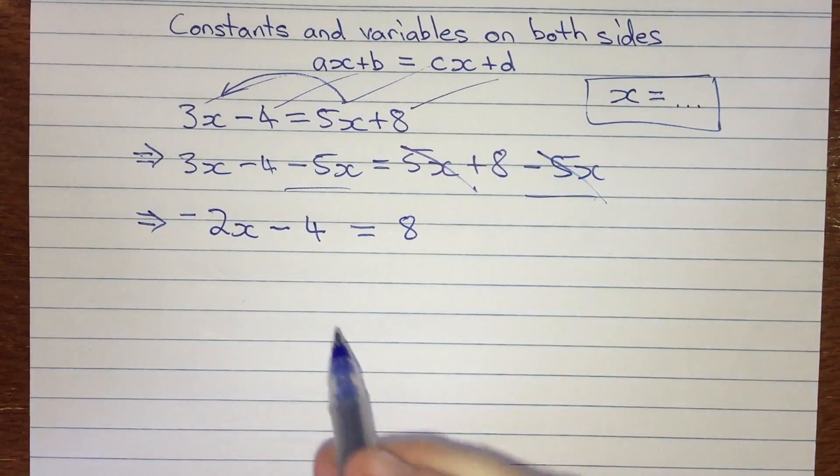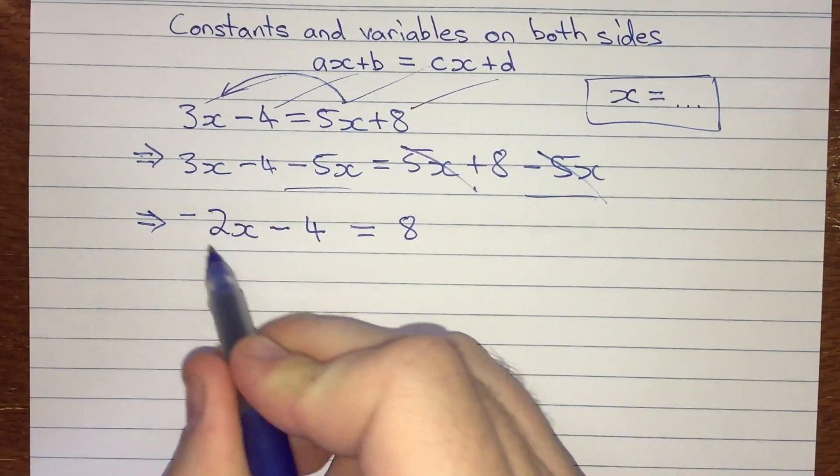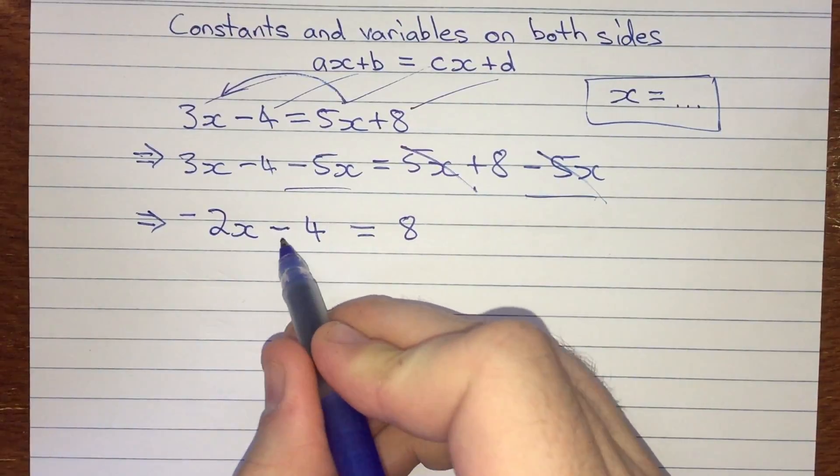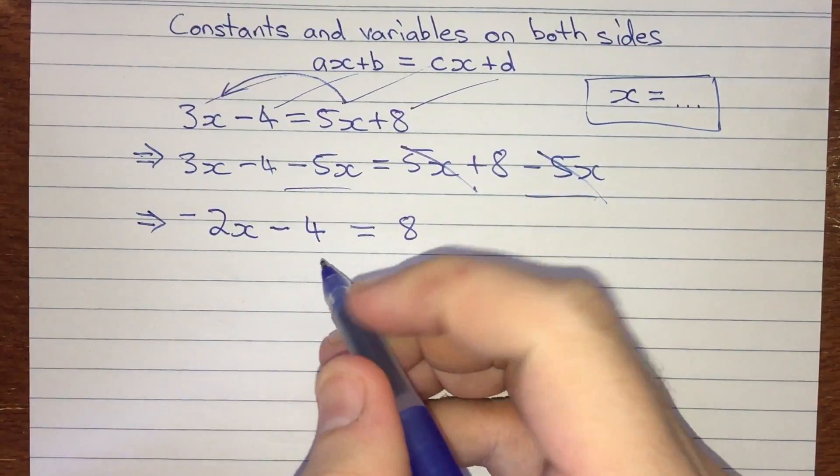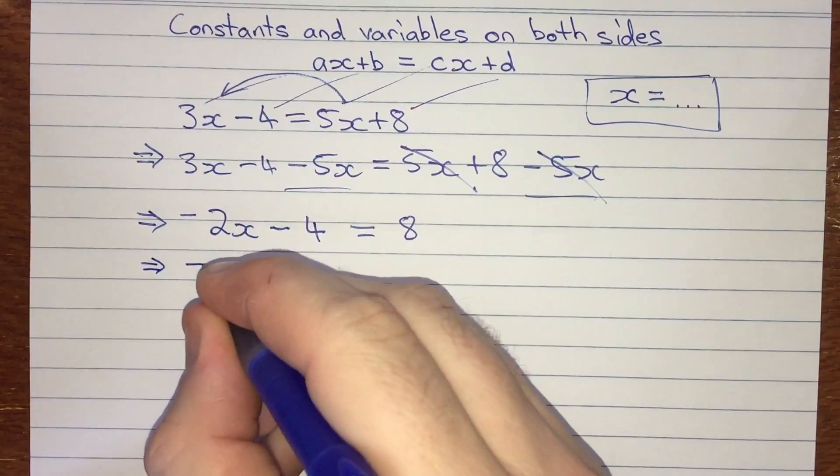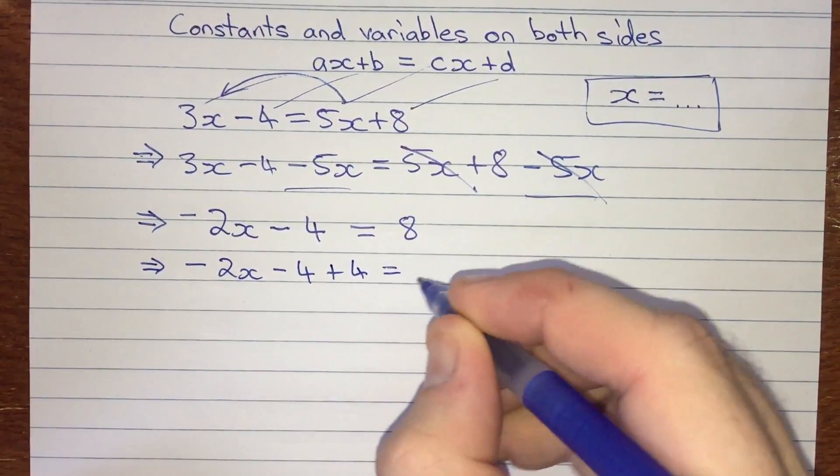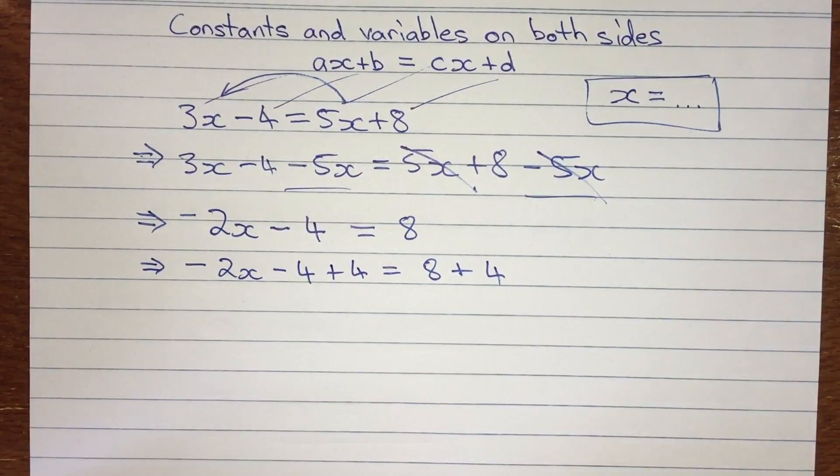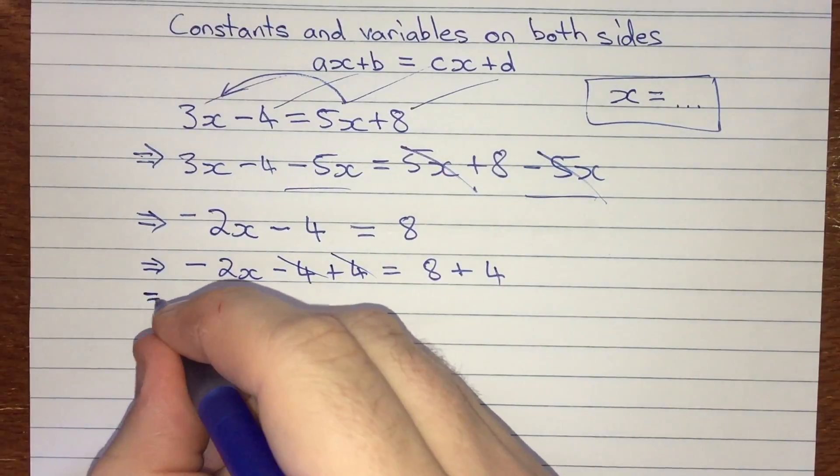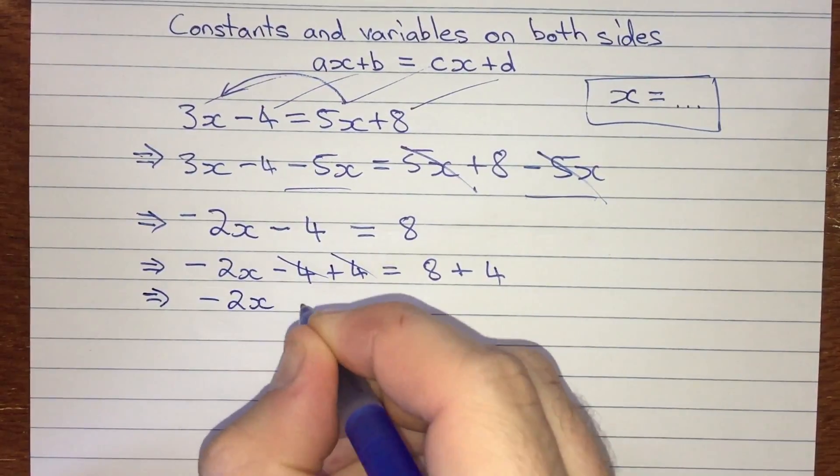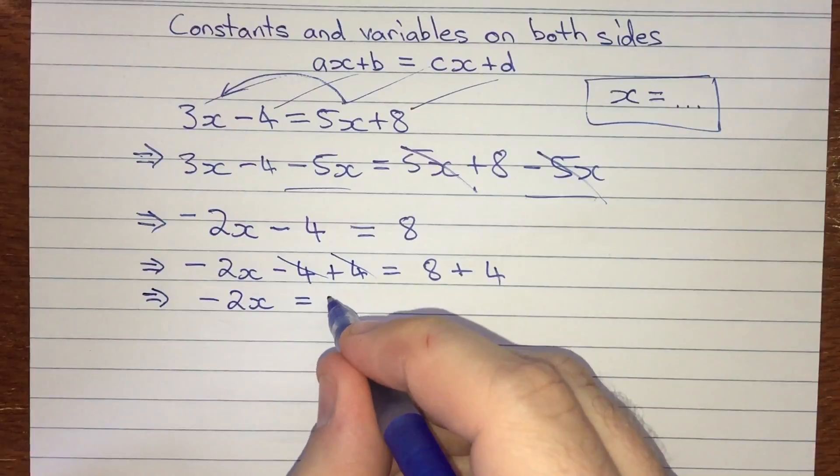Now this is something we've seen before. So what we want to do, remember, we're trying to get at the x by itself. I want to get rid of this minus 4, and I do that by adding 4 to both sides. So we've got minus 2x minus 4 plus 4 equals, must do it to both sides, so 8 plus 4. Those are going to cancel each other out to give 0. And we've got minus 2x is equal to, 8 plus 4 of course is 12.